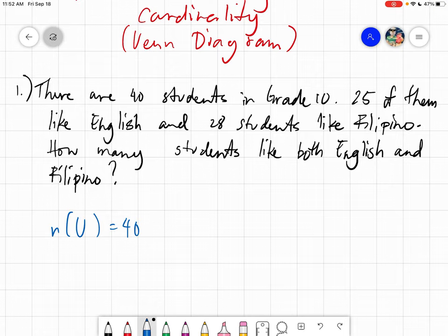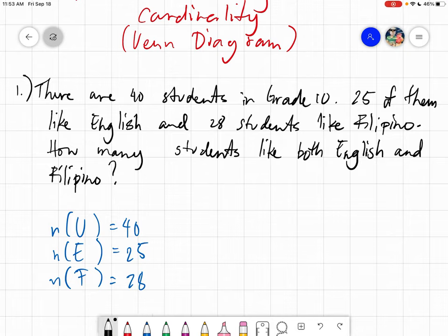Next naman, we are talking about English, so let's denote the English as E. So when we are talking about the cardinality of those who are liking English, the answer is just simply 25. And lastly, let's denote the cardinality of those who like Filipino, the answer is 28. But meron tayong dalawang set on this one, so let me try to draw this one.